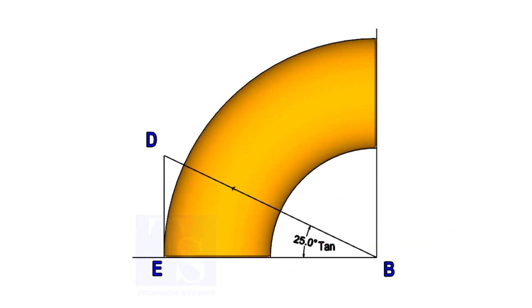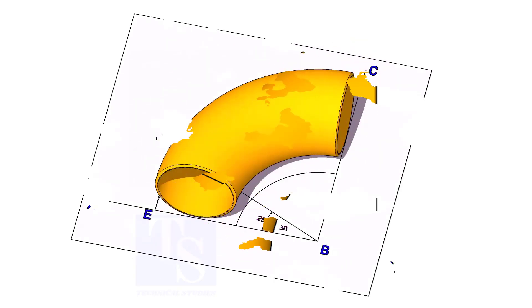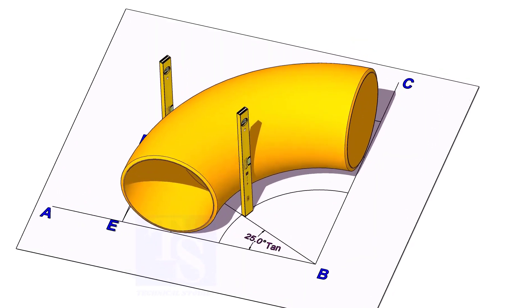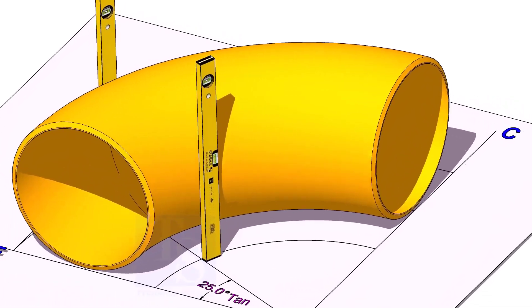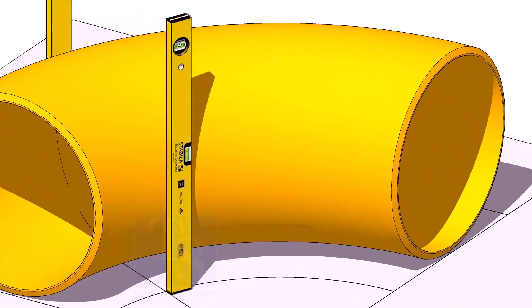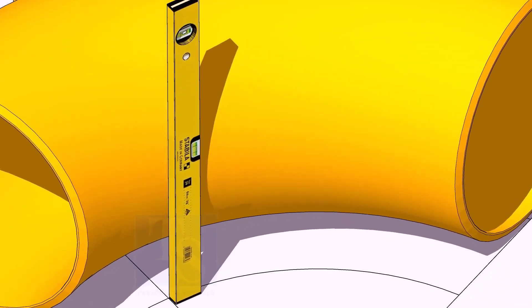Now, put the elbow exactly on the layout as shown. Hold two large level bottles at the edge of the elbow on both sides vertically and strike a mark where the level bottle edge touches the elbow.